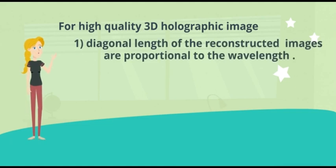Here is our own guide for creating high-quality 3D holographic image taken from our own experimental work. The diagonal length of the reconstructed images are found to be directly proportional to the wavelength. For no overlapping between the reconstructed object and object autocorrelation, L, which is the distance between the object and the reference, should be greater than 1.5 times D.